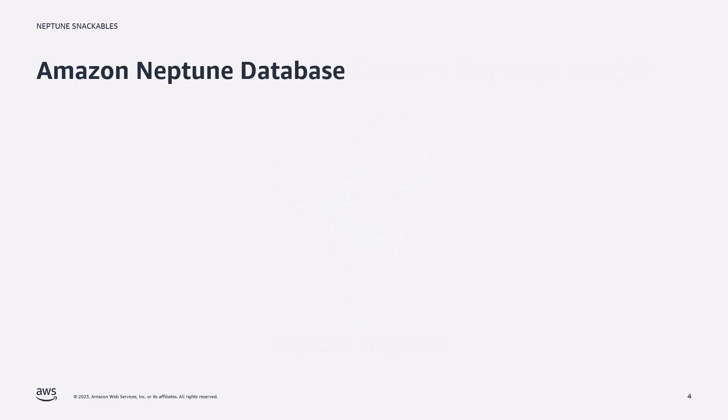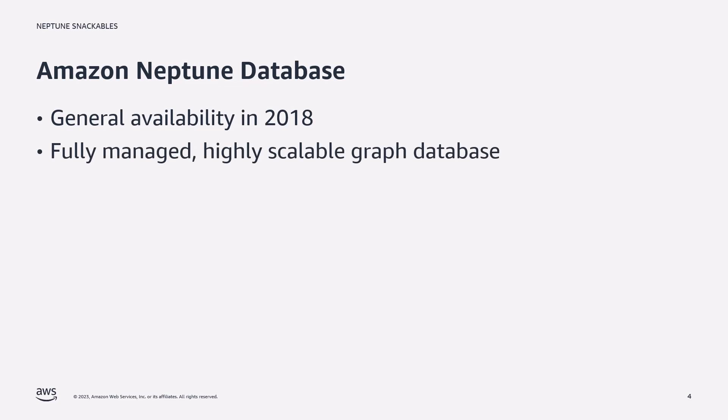Let's first talk about Amazon Neptune database. Neptune database went on general availability in 2018. Prior to that, AWS didn't have a graph database service that supported customers with highly connected data sets. Neptune database is a fully managed service and it provides customers with flexibility and scalability for the most demanding of workloads.